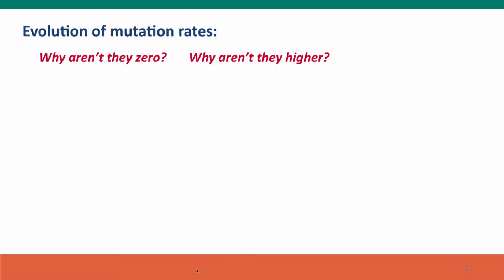Now, I want to take a minute to think about the evolution of mutation rates. Why do we have the mutation rates that we have? We talked about mutation rates in an earlier lecture in this module. Why aren't mutation rates zero if most mutations are harmful? Why aren't they higher so we get more beneficial mutations?